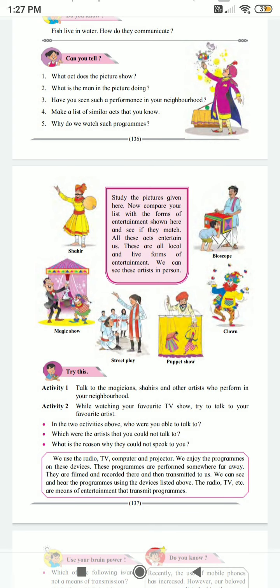Try this. Activity 1: Talk to the magicians, street performers, and other artists who perform in your neighborhood. While watching your favorite TV show, try to talk to your favorite artist. In these two different activities, who are you able to talk to? Which are the artists that you could not talk to? What is the reason why they could not speak to you directly?